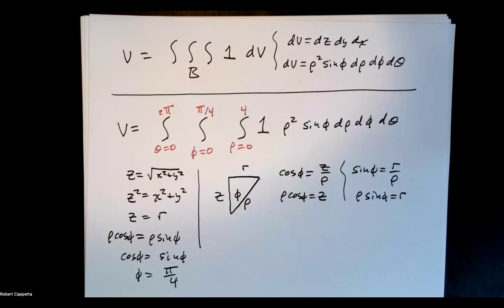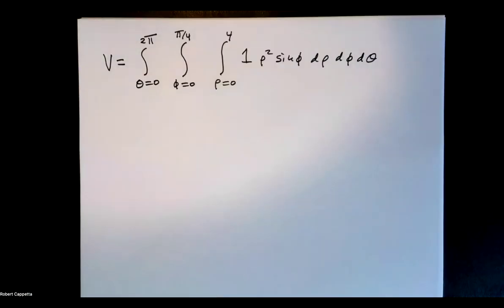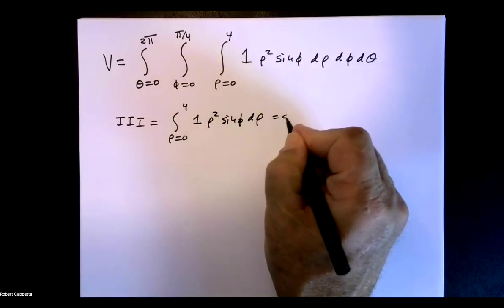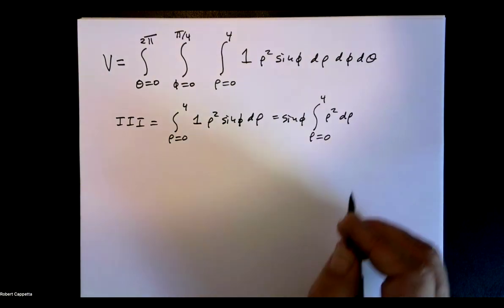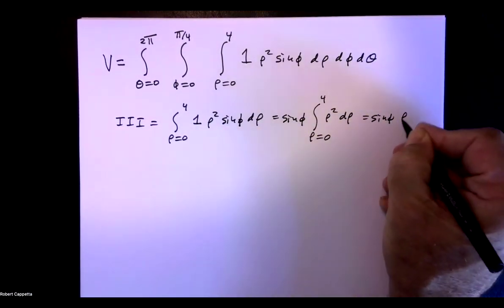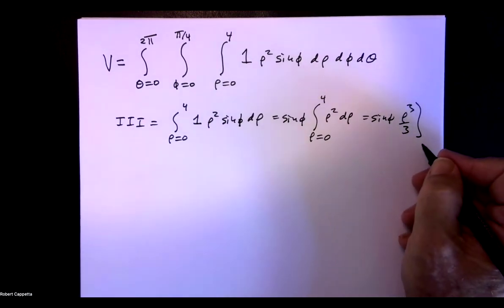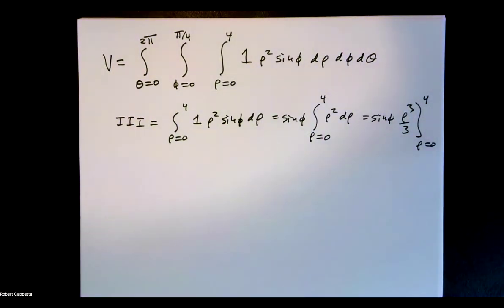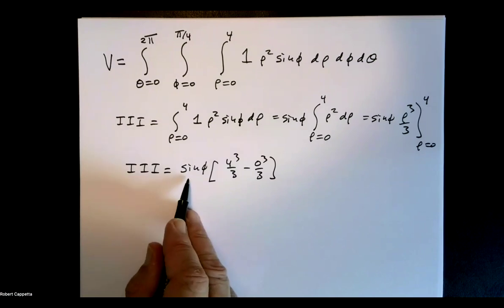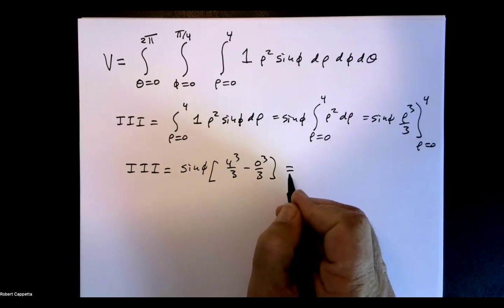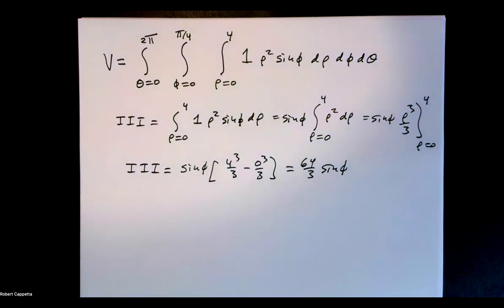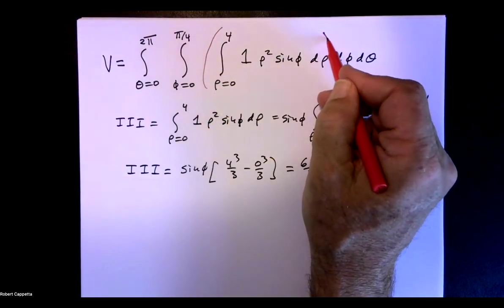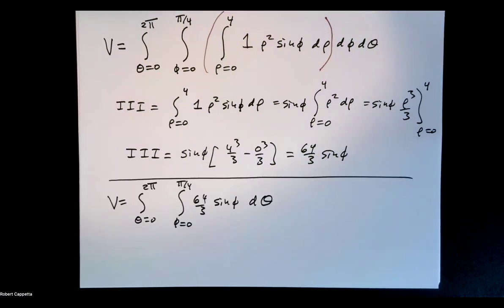So we have the triple integral set up. Let's go ahead and simplify it. So here's where we start. So let's do our innermost inner integral. It perceives sine phi as a constant, so sine phi comes out in front. The antiderivative is rho to the third over 3. Evaluate it as rho goes from 0 to 4. Plugging that in, we get innermost inner integral is sine phi times 4 to the third over 3 minus 0 to the third over 3, which gives me 64 over 3 sine phi. And then we'll replace that in the innermost inner integral here.